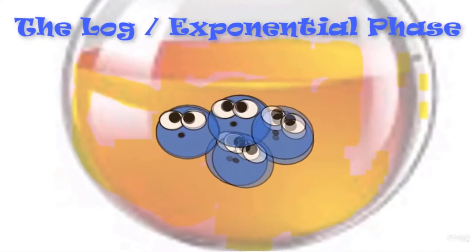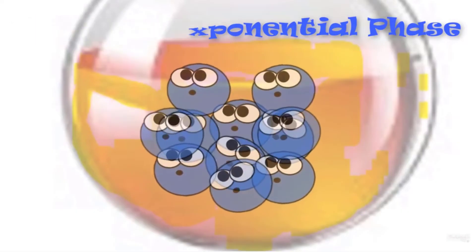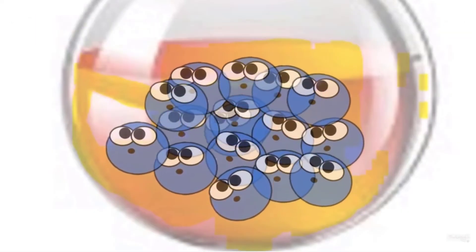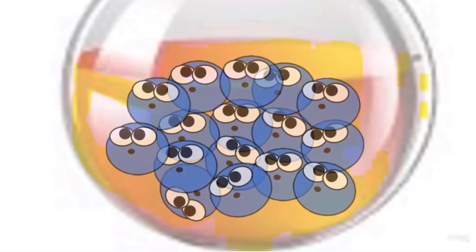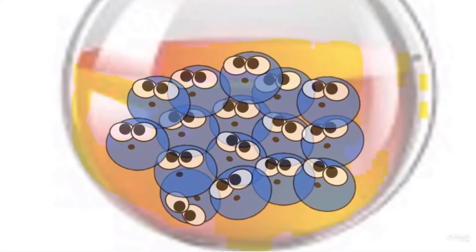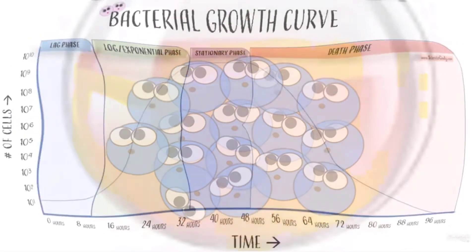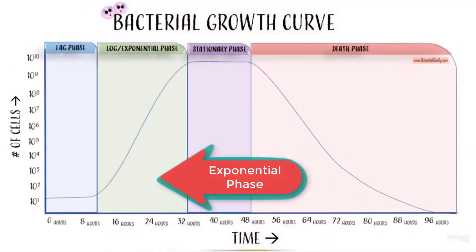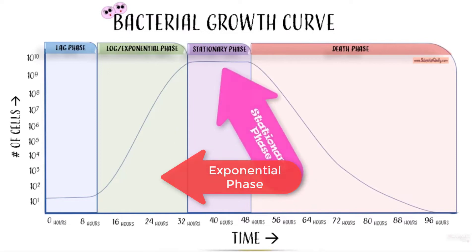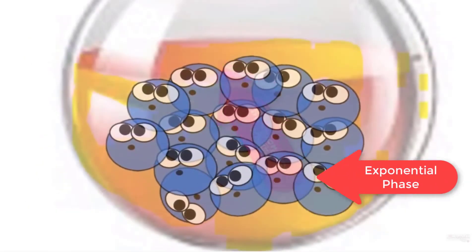Once they have adapted, we will experience the exponential phase or log phase of our growth curve. This growth is seen because there is plenty of nutrients and plenty of space for growth to occur. This exponential or logarithmic growth will eventually level off.